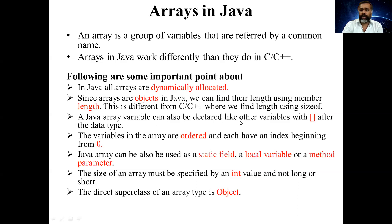A Java array variable can also be declared like other variables with square brackets and the data type. The variables in an array are ordered and each has an index beginning from zero. An array can also be used as a static variable, local variable, and method parameter. The size of an array must be specified by an int value, not long or short. The direct superclass of array type is Object.